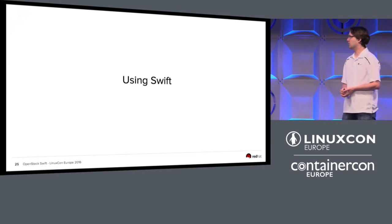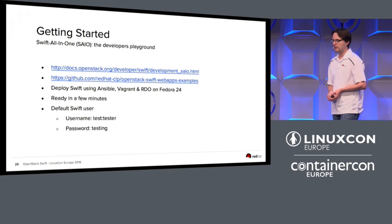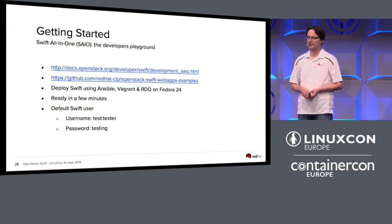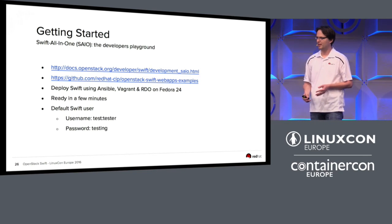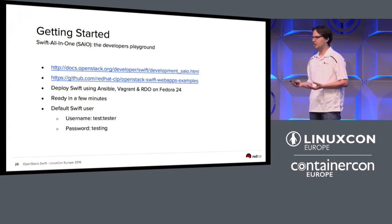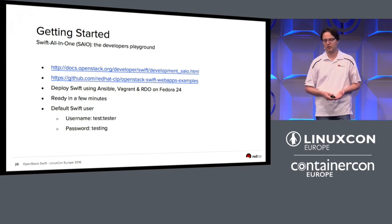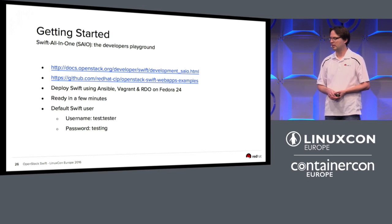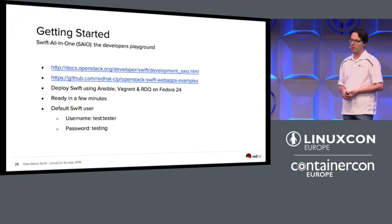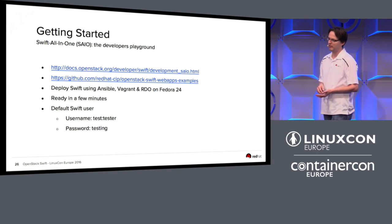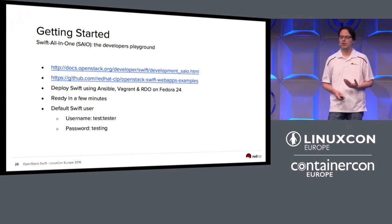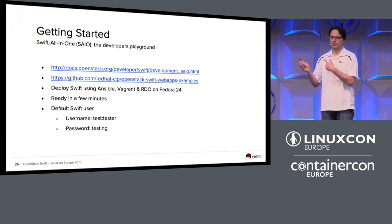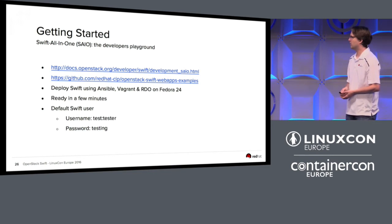There is an easy single-node setup to run Swift on a single node. Don't use it in production — that's a bad idea — but it's very good for development, upstream development for Swift itself, or writing applications for Swift. It's described well on the OpenStack documentation website, but there's also an Ansible file I made available using Vagrant and RDO on Fedora 24 to run a small single-node environment within a few minutes, so you can try out Swift and see if it's something for you. You'll find that on the link in the slides.